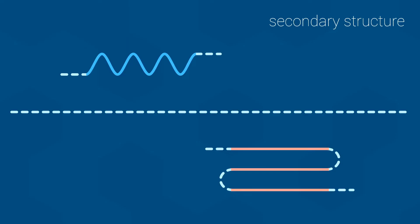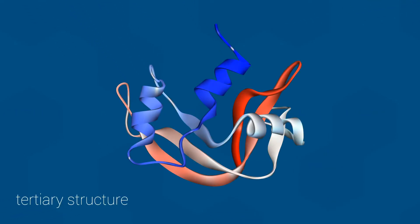Moving on, we come to the third level of structure, known as the tertiary structure. The tertiary structure is formed by the alpha helices and beta sheets folding up together to form the overall three-dimensional shape.